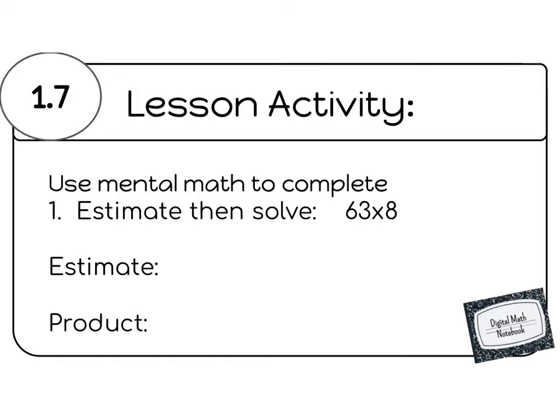Time for our lesson activity. First, we're going to estimate and then we will solve to get the actual product. In order to estimate, we're going to round. I'm going to round to the tens place, so I underline the digit and look next door. Next door I see a 3. 3 doesn't make me round up, so I know the 6 is going to stay the same. So I'm going to estimate 60 times 8.